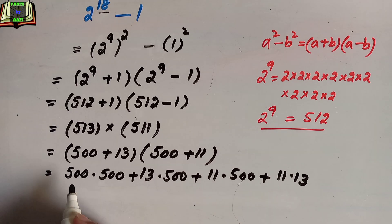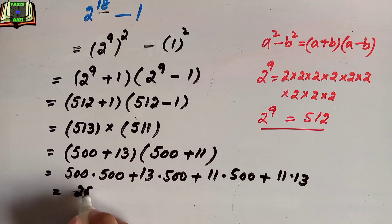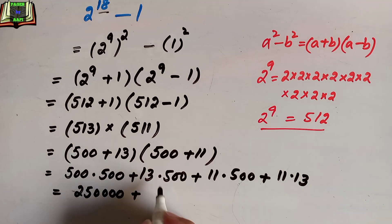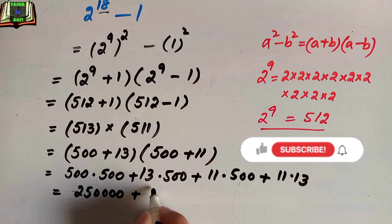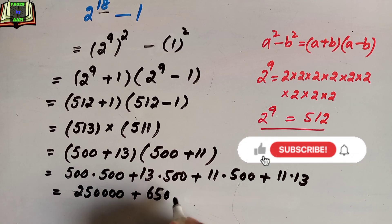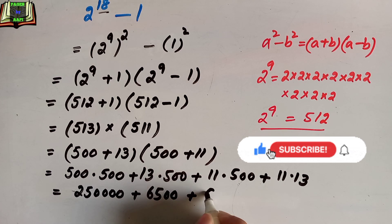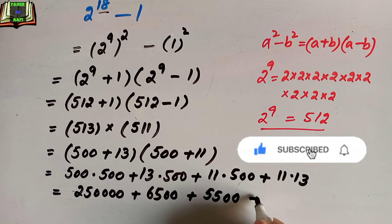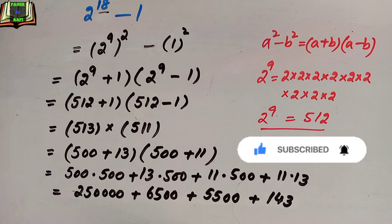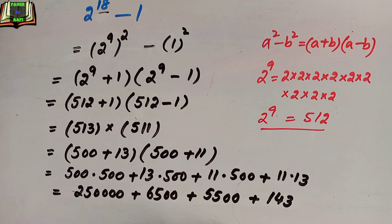The easy calculations remaining are: 500 × 500 = 250000, 13 × 500 = 6500, 11 × 500 = 5500, and 11 × 13 = 143. Simply adding them all together gives 262...